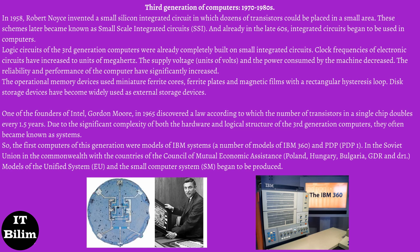One of the founders of Intel, Gordon Moore, in 1965 discovered a law according to which the number of transistors in a single chip doubles every 1.5 years. Due to the significant complexity of both the hardware and logical structure of third generation computers, they often became known as systems. The first computers of this generation were models of IBM systems: IBM 360 and PDP-1. In the Soviet Union and Commonwealth countries of the Council of Mutual Economic Assistance — Poland, Hungary, Bulgaria — models of the unified system (ES) and the small computer system (SM) began to be produced.